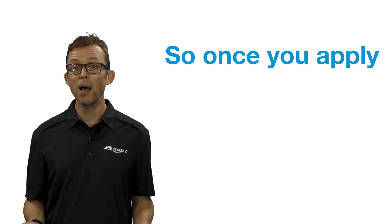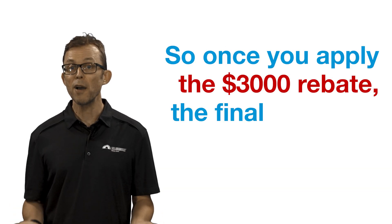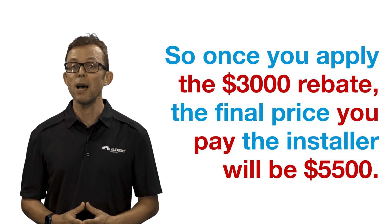The gross cost before rebate of a mid-range 6.6 kilowatt system is around $8,500. So once you apply the $3,000 rebate, the final price you pay the installer will be around $5,500.